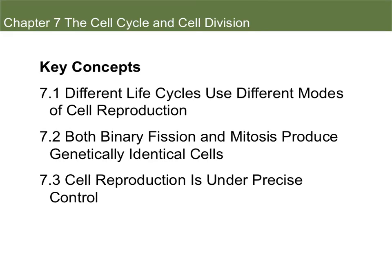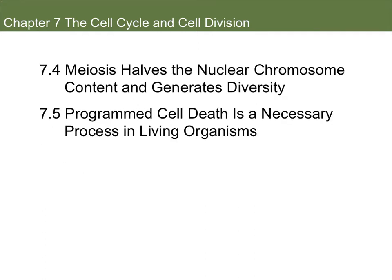In the last video, we already went over 7.1, 7.2, and 7.3, which talked about the different modes of cell reproduction, the genetically identical cells produced in binary fission and mitosis, and how cell reproduction and the cell cycle is under precise control through CDKs and cyclins. In this video, we're going to talk about meiosis, which halves the nuclear chromosome content and generates diversity, and also about programmed cell death being a necessary process in living organisms.